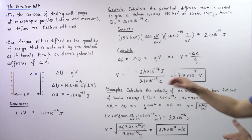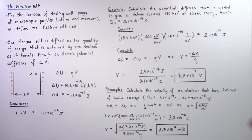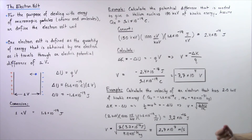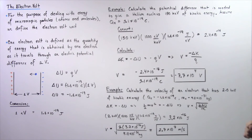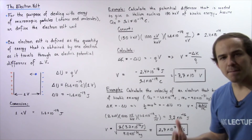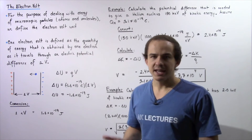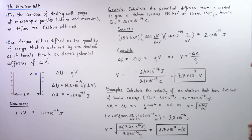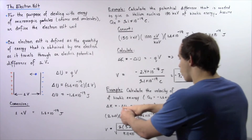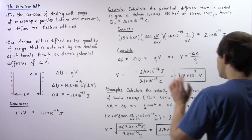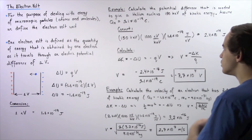Now let's move on to example two. Calculate the velocity of an electron that has two kilo electron volts of kinetic energy. Assume the charge of the electron is negative 1.6 times 10 to the negative 19 coulombs, and the mass of the electron is 9.11 times 10 to the negative 31 kilograms. In step one, we determine the equation we're going to use.